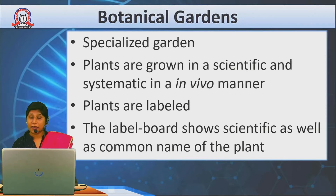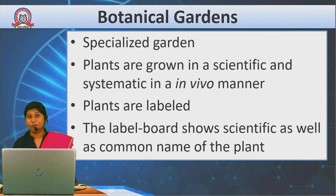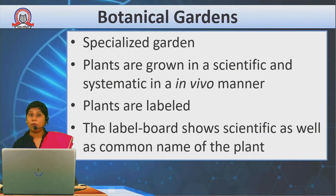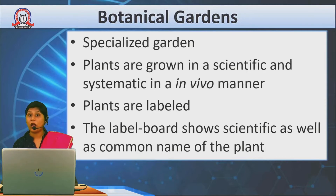Plants are well labelled with their common name, scientific name, and family. For example, Mango — its common name in English is Mango, in Marathi it is Amba, in Hindi it is Aam. And its scientific name is Mangifera indica. So the scientific name and common names will all be mentioned on the label. This is what we do in botanical gardens.